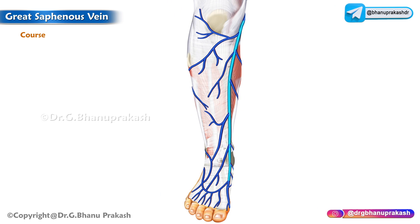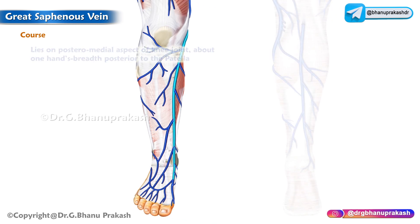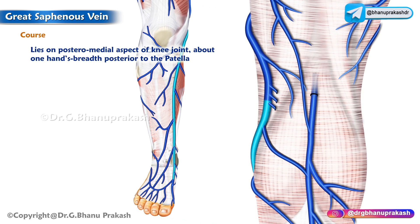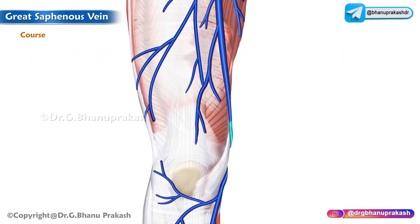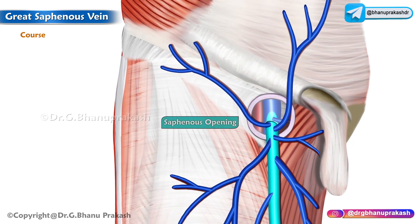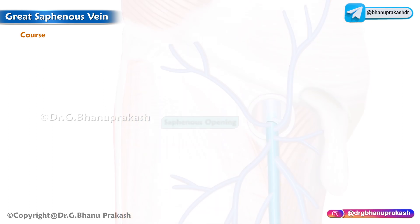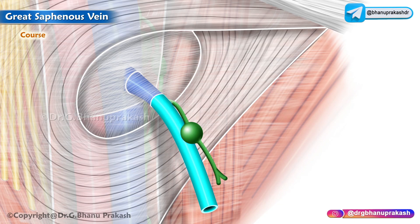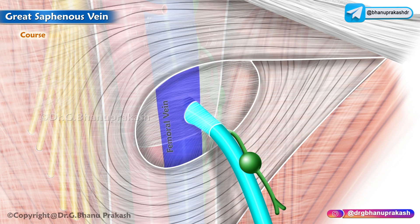From the medial malleolus it crosses obliquely the medial surface of the lower third of the tibia, then ascends a little behind the medial border of the tibia to reach the knee, where it lies on the posteromedial aspect of the knee joint — about one hand breadth posterior to the patella. From here it runs upwards along the medial side of the thigh to reach the saphenous opening, also known as the fossa ovalis.